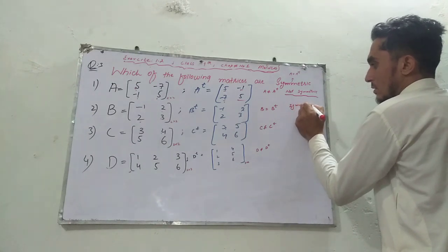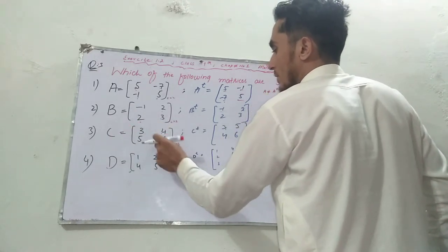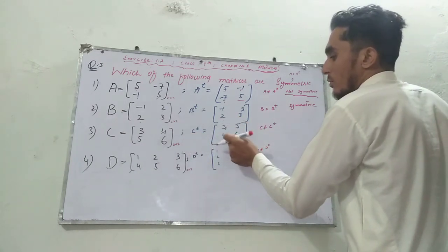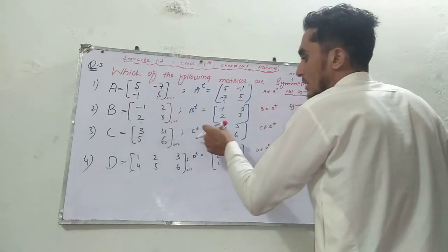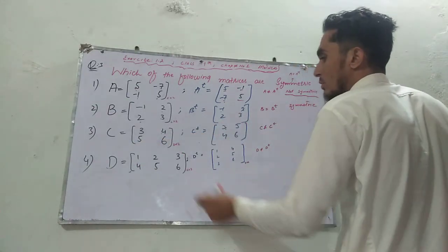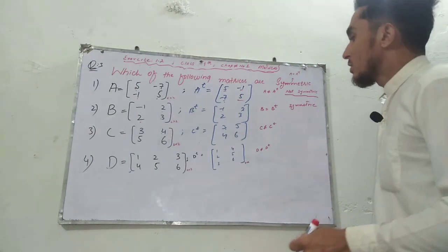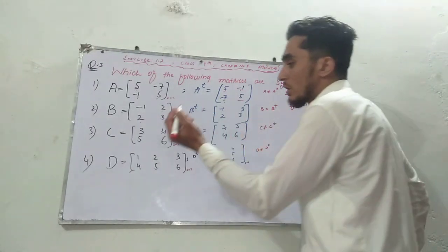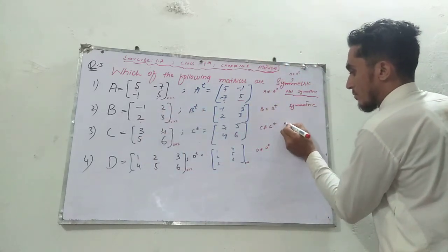Now C equals [3, 4, 5; 4, 0, 7; 5, 7, 6]. When we transpose, we get [3, 4, 5; 4, 0, 7; 5, 7, 6]. Checking: 4 and 4 are equal, but 5 and 7 are not equal, and 6 is not equal. So this is not symmetric. It doesn't have symmetry.